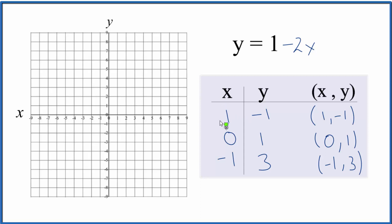So we have 1 for x and negative 1 for y. 1, negative 1. We have 0 for x and 1 for y. And then we have negative 1 for x and 3, 1, 2, 3 for y.